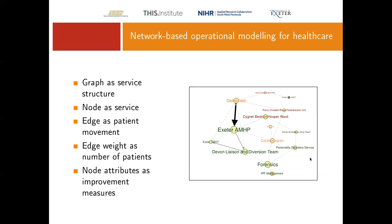Patients are moving from the liaison diversion team to different areas — the CRHT or forensics. For those who have worked in mental health services, this will be recognizable: allied mental health partners assess people who might require inception and refer on to the liaison and diversion team. A minority requiring higher-level risk management go to forensics; those of lower risk might be referred to the crisis resolution home treatment team. We can start to see the logic and movement between services.